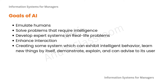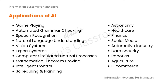The goals of AI include emulating human behavior or human intelligence, solving problems which require intelligence, developing expert systems for real-life problems, enhancing interaction, and creating systems which exhibit intelligent behavior — systems that learn new things by themselves, demonstrate it, explain it, and can even advise their users, like a decision support system.